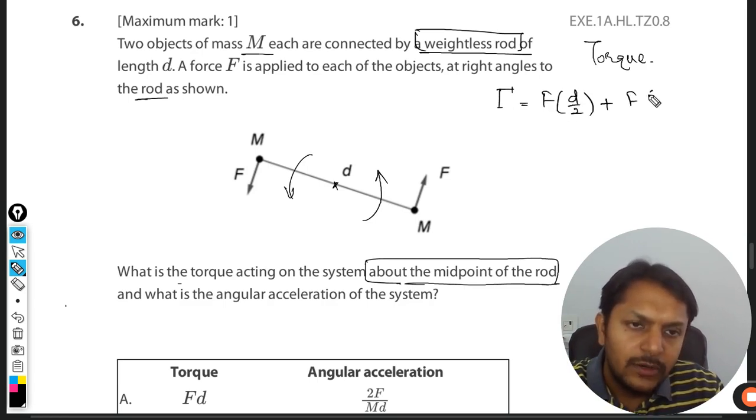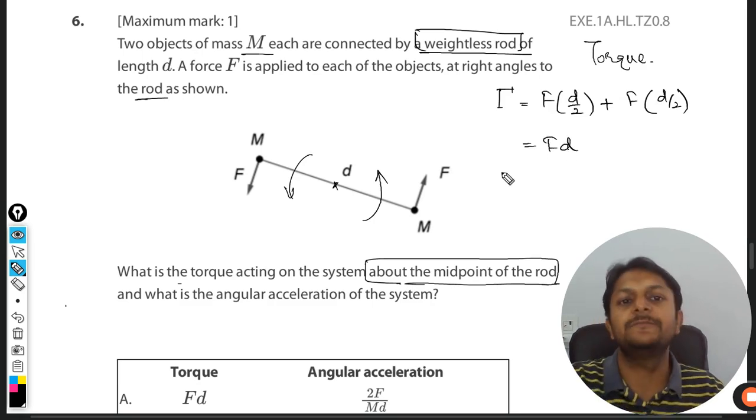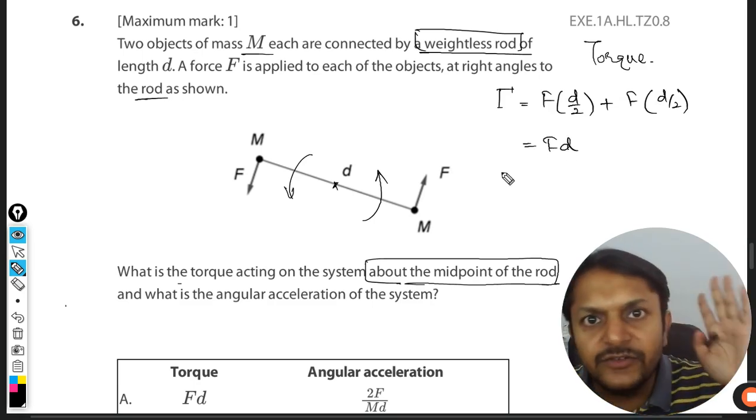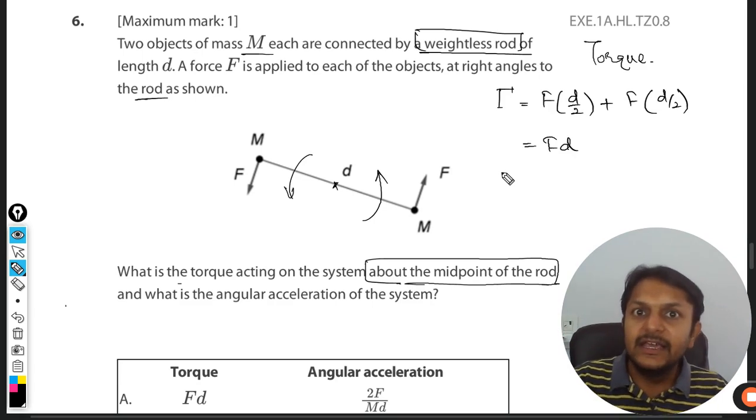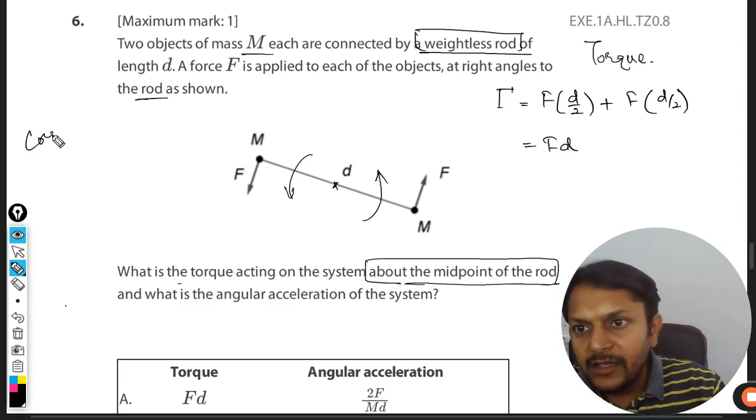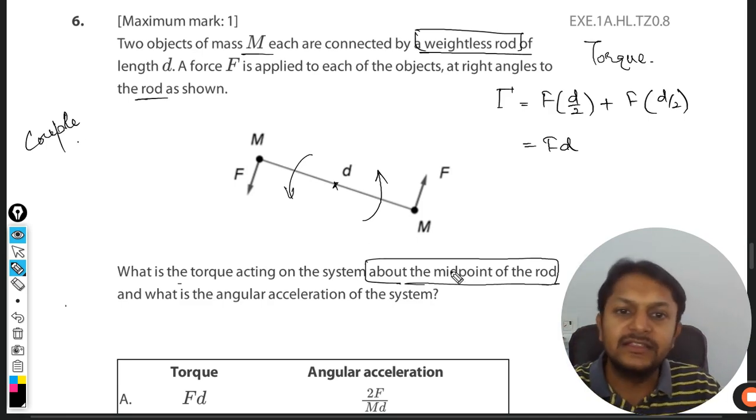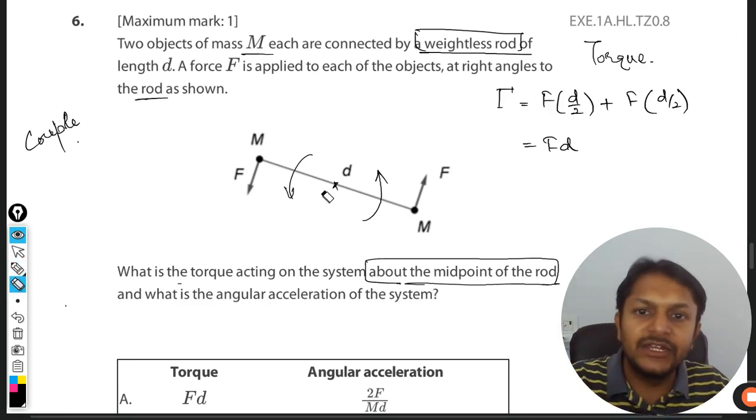F into d/2 plus F into d/2, which is coming out to be Fd. Now the second method to find the torque is couple. Couple, what is happening in this couple?